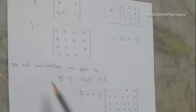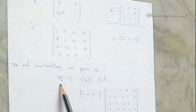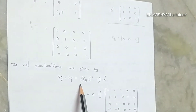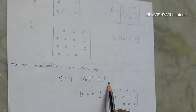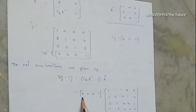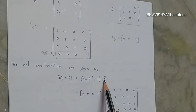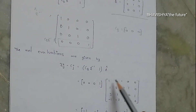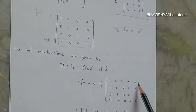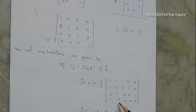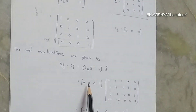Now let us find the net evaluations using the formula ZJ - CJ = CB·B-inverse·1 into A-cap. Here, CB·B-inverse·1 corresponds to the bottom row of B-inverse-cap, which is [0, 0, 0, 1]. The A-cap matrix has rows [1,1,1,0,0; 1,2,0,1,0; 3,1,0,0,1; -1,-2,0,0,0]. Multiplying [0,0,0,1] by A-cap gives ZJ - CJ = [-1, -2, 0, 0, 0].